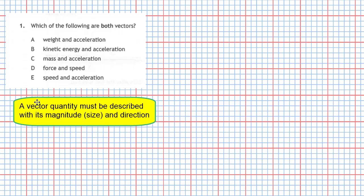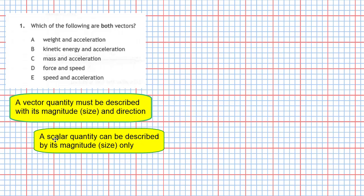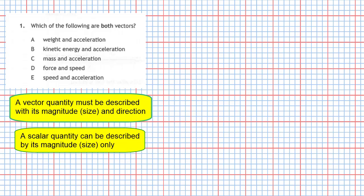Quick revision first of all: A vector quantity must be described with its magnitude (size) and its direction. A scalar quantity can be described by its magnitude (size) only, and you don't need to bother about direction.